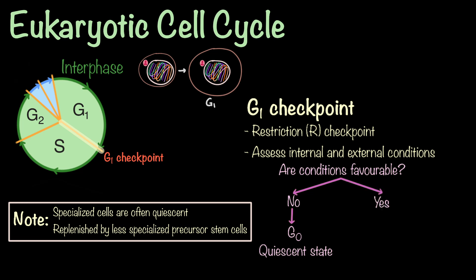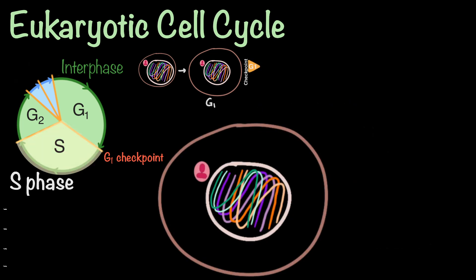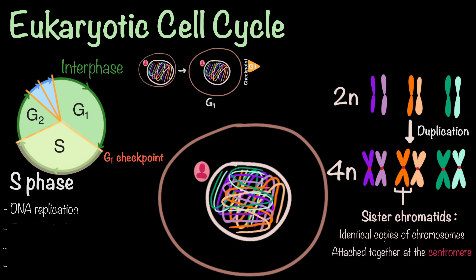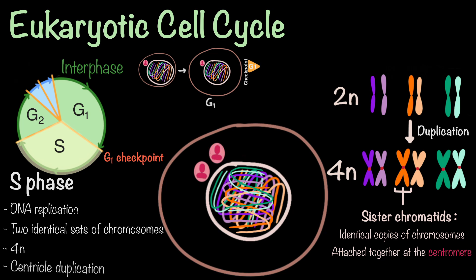For cells that pass the G1 checkpoint and enter the S phase, they are now irreversibly committed to division, barring any unexpected problems such as DNA damage or replication errors. The S phase is where DNA replication occurs. Each chromosome is duplicated, forming sister chromatids, which remain attached together in the middle at what's called the centromere. It is important to note that in the S phase, the DNA remains in its uncondensed form. By the end of the S phase, each cell now contains two complete and identical sets of the genome, or 4n chromosomes. The centrioles are also duplicated in this phase.